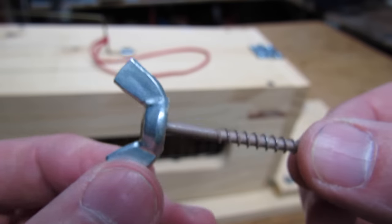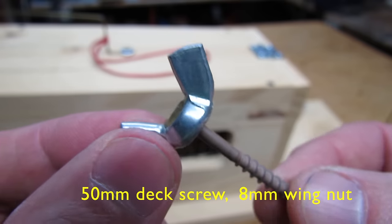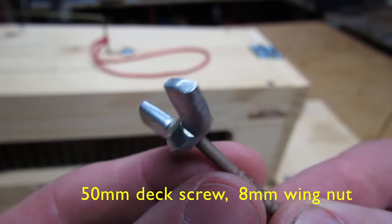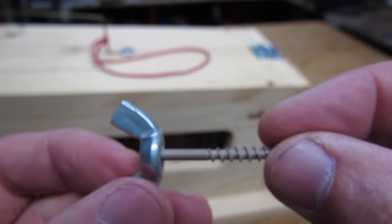The wingnut that I made up is just a 2 inch deck screw with the head ground down to fit inside of a 5/16 inch wingnut. Then I just applied some epoxy and it made a neat little screw.